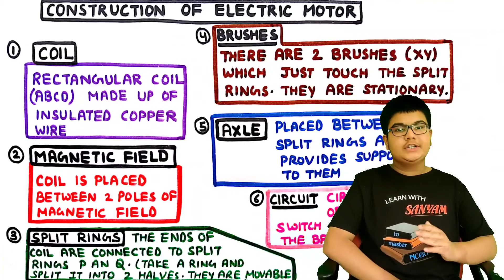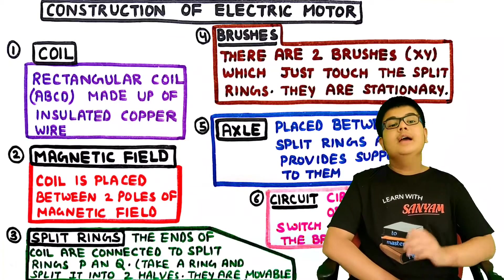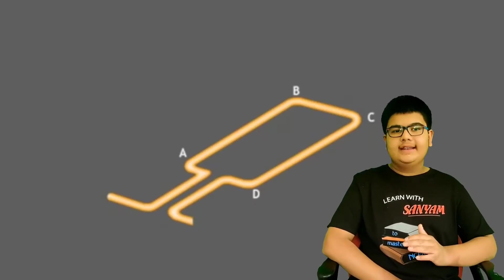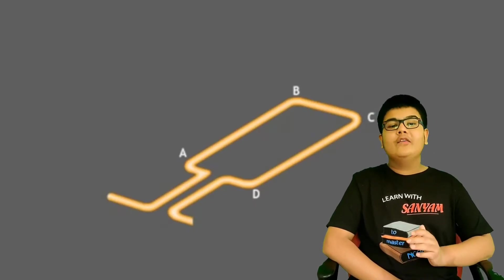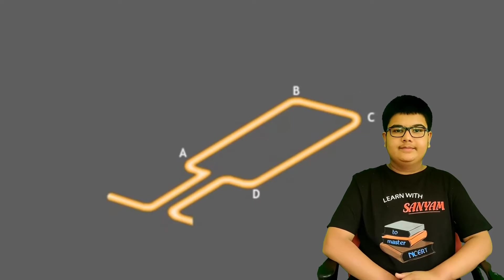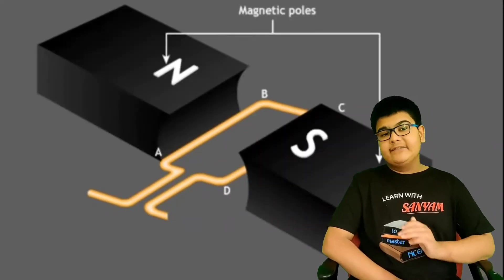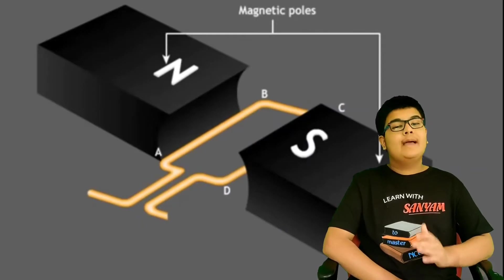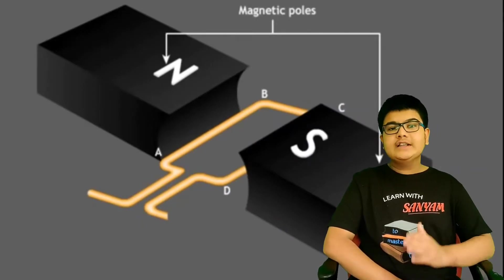Let's study the construction of electric motor. An electric motor consists of a rectangular coil ABCD made up of insulated copper wire. Second, magnetic field. The coil is placed between two poles of magnetic field, as you can see in this diagram.